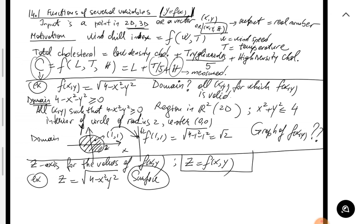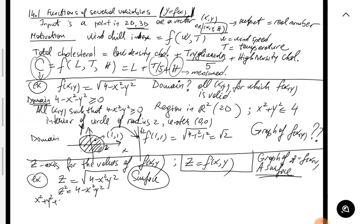We have to be careful: since z is the positive square root, the z values are non-negative, so the graph is only the upper hemisphere of that sphere of radius 2, not the whole sphere. Typically the graph of a function of two variables will be a surface — sometimes a recognizable one. Make sure to also watch the Maple presentation at the end to see these examples visualized.